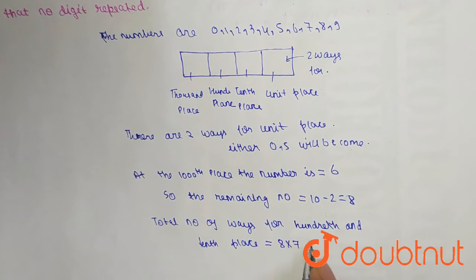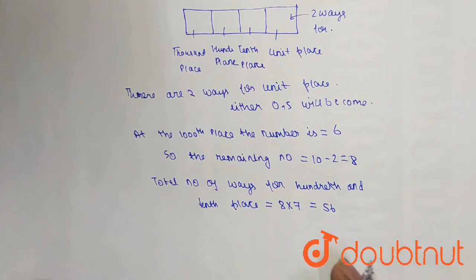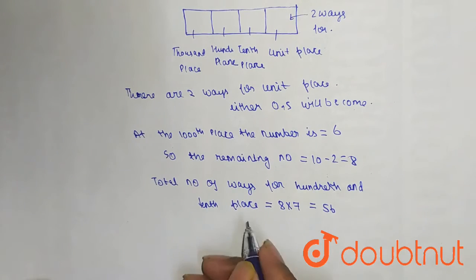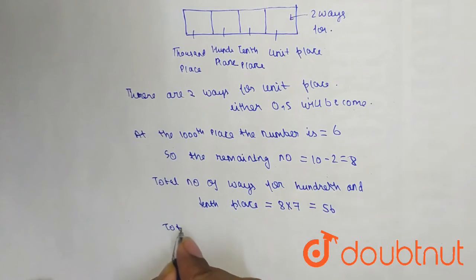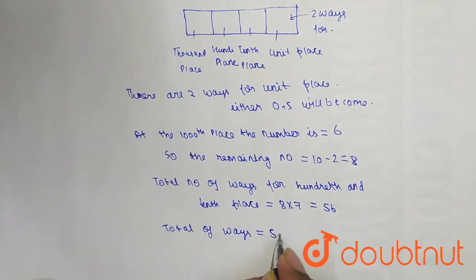And we have to find the number of positive integers which are greater than 6000 and less than 7000 which is divisible by 5. So total number of ways is equal to 56 into 2 for unit place.